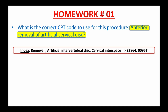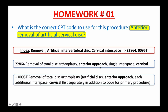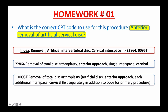After reviewing, the codes indicate that 22864 is 'removal of total disc arthroplasty, anterior approach, single interspace, cervical.' And 0095T is a Category III code, located before appendix A in your CPT book. The plus sign indicates that this is an add-on code, so it must be reported with the primary code. It describes 'removal of total disc arthroplasty, artificial disc, anterior approach, each additional interspace, cervical — list separately in addition to code for primary procedure.' There is no other code to check, so the correct answer for this question is 22864 and 0095T. I hope you got it right.